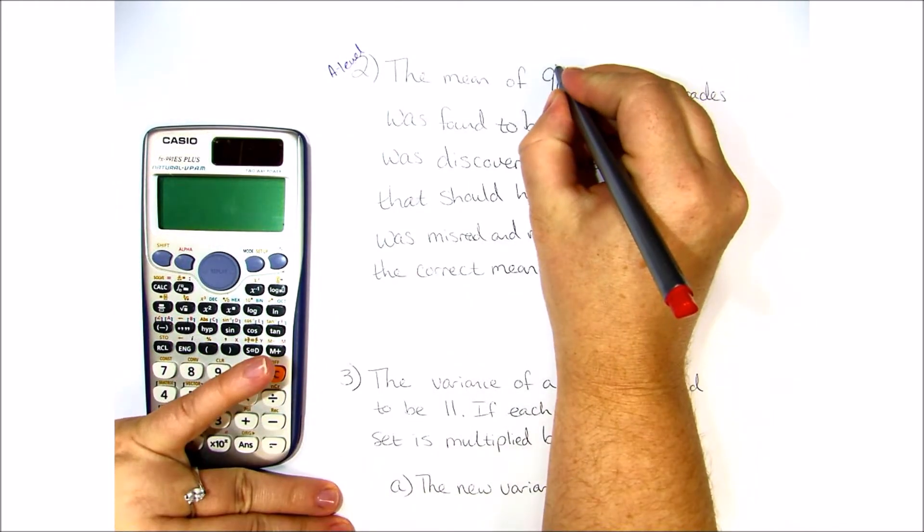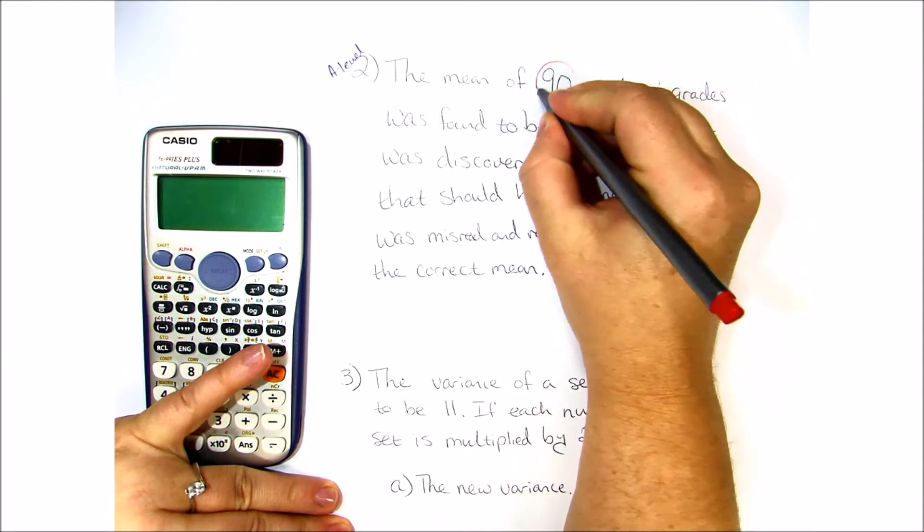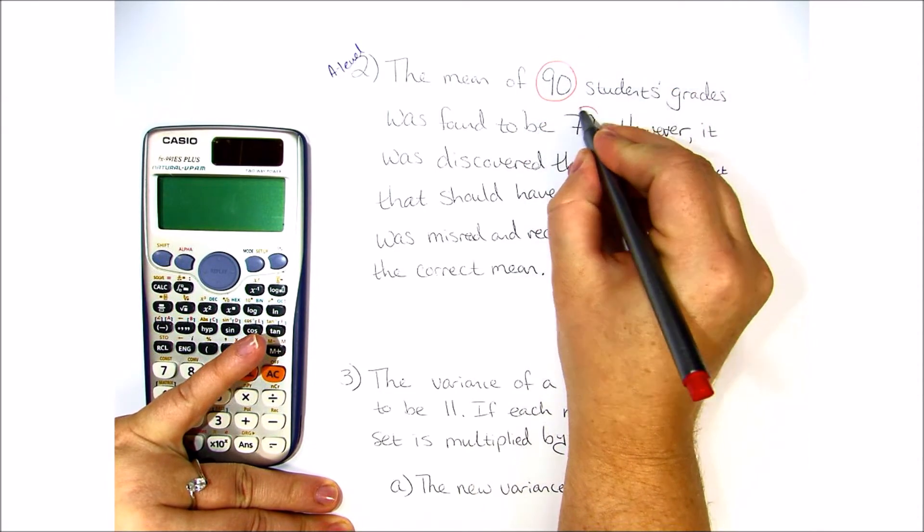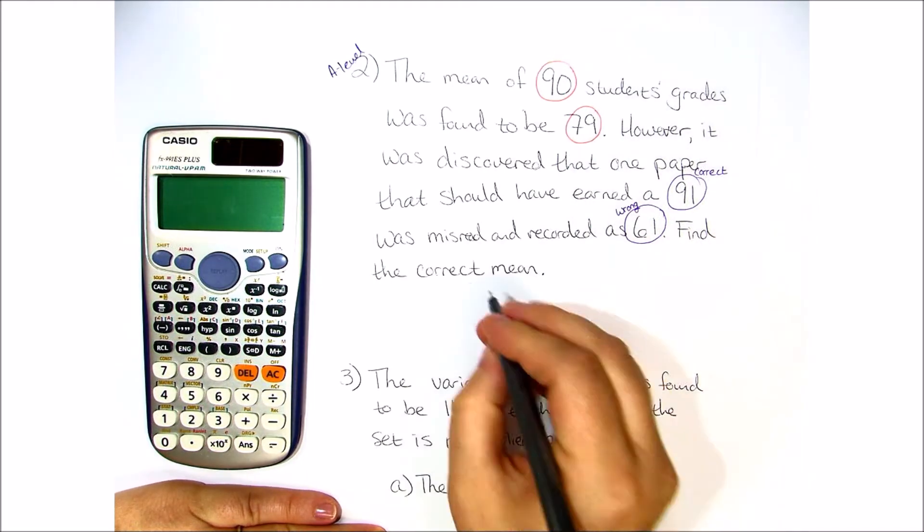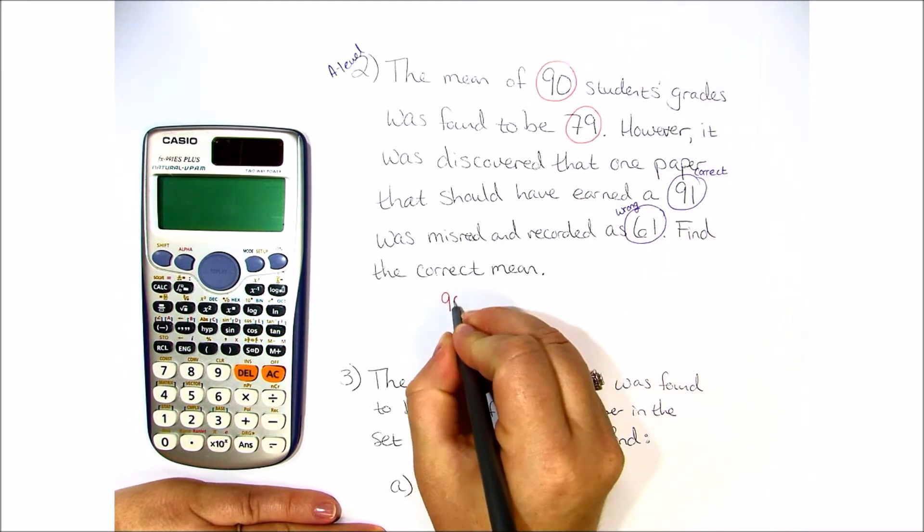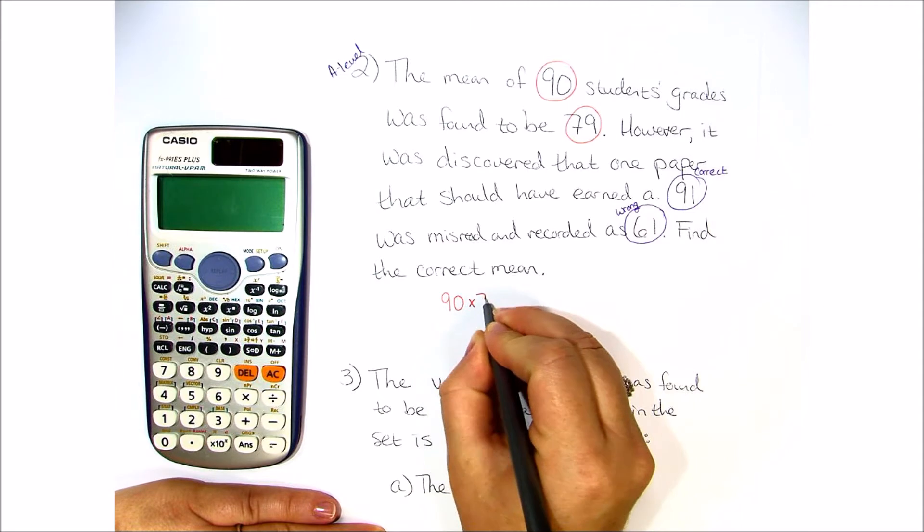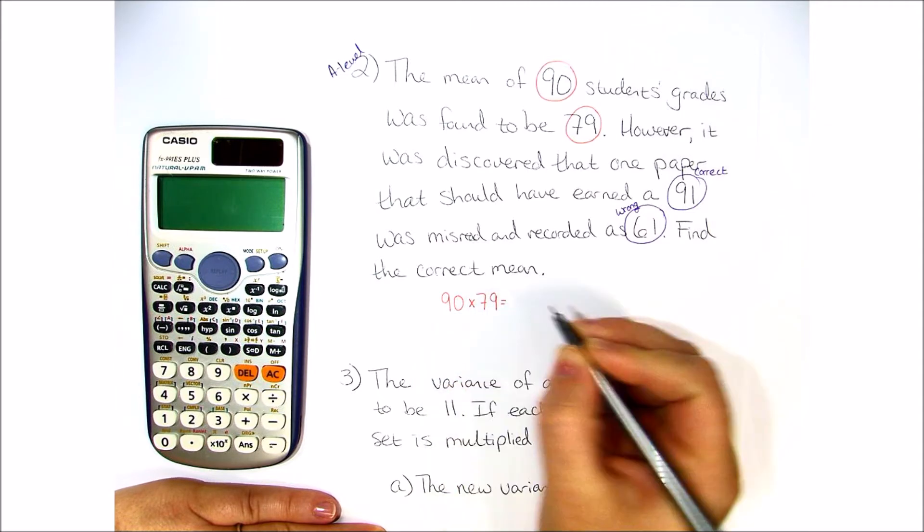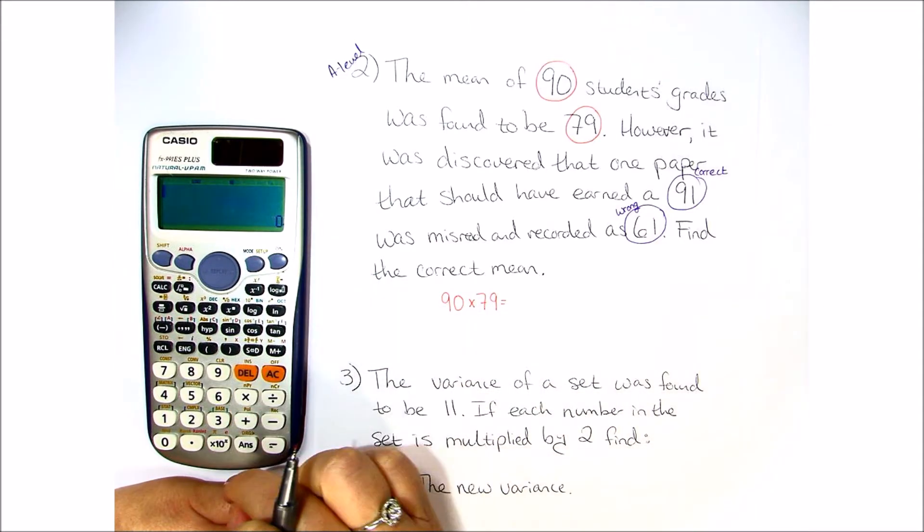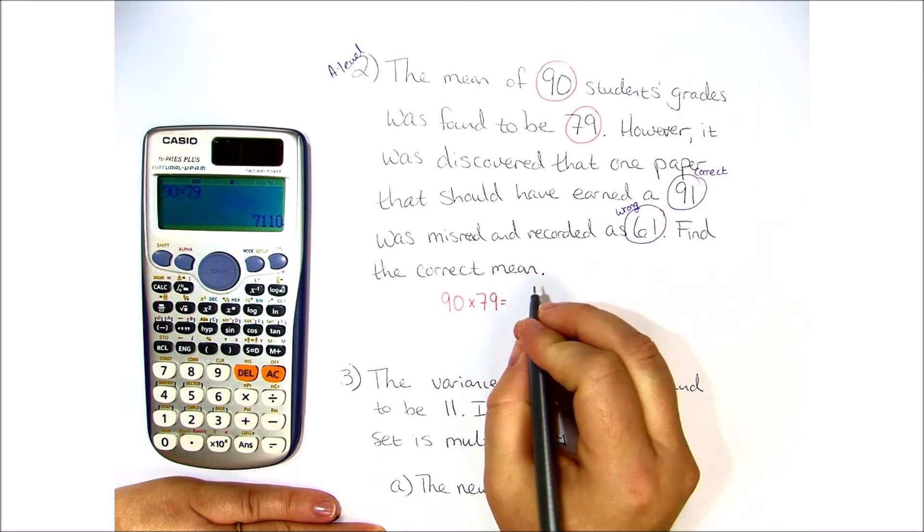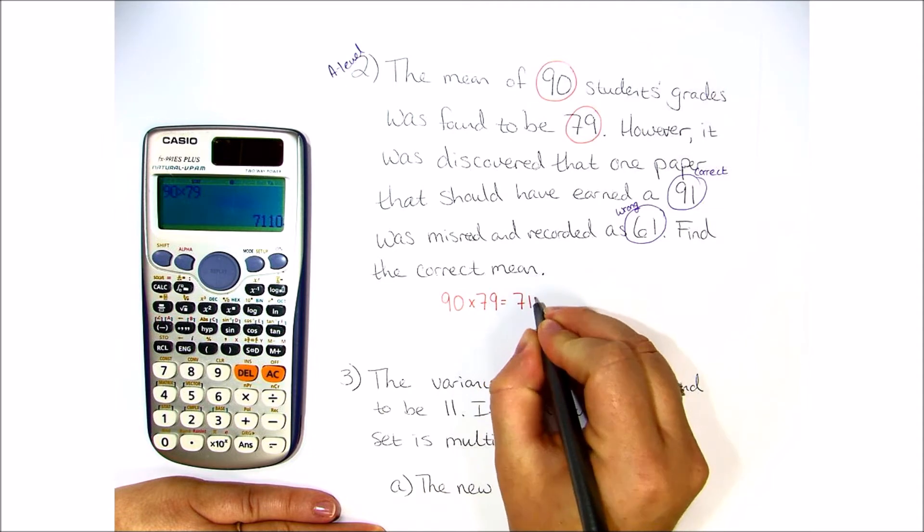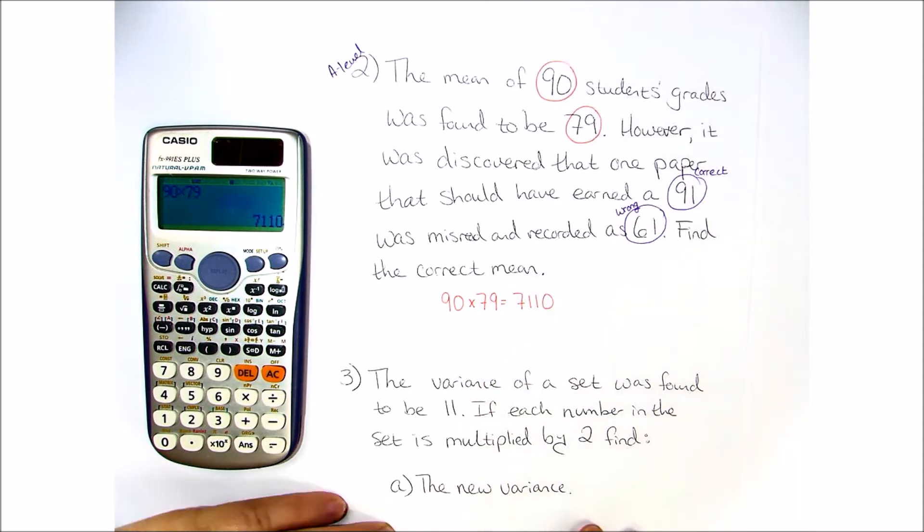So we have 90 students and 90 students together earned an average of 79. So if we look at the total points they earned, we're going to take the 90 students and multiply it by the grade of 79. So 90 times 79 means they earned a total of 7,110 points.